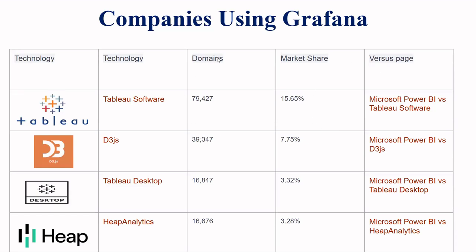There are many companies using Grafana. Competitors covered include Tableau Software, D3.js, Tableau Desktop, and Heap Analytics. The current market share breakdown is: Tableau Desktop at 3.32 percent and Heap Analytics at 3.28 percent.